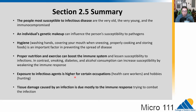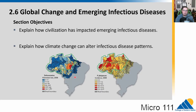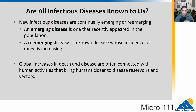Let's finish up by talking about global change and emerging infectious diseases. How is the expansion of human civilization impacting infectious diseases, and how can climate change alter infectious disease patterns? New infectious diseases are constantly emerging or re-emerging. An emerging disease is one that recently appeared in a population — SARS-CoV-2, the COVID-19 causing virus, is an emerging disease; interactions between humans and bats led to that emergence.